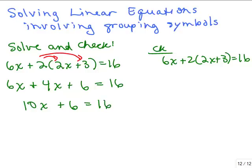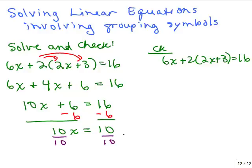Each side is simplified, so I'm going to use the addition property first by subtracting 6 from both sides so that I have my variables on the left and constants on the right. So 10x equals 10, and then we divide both sides by 10, so that x equals 1. Remember, if you want to write it using a solution set, you would write it like this.